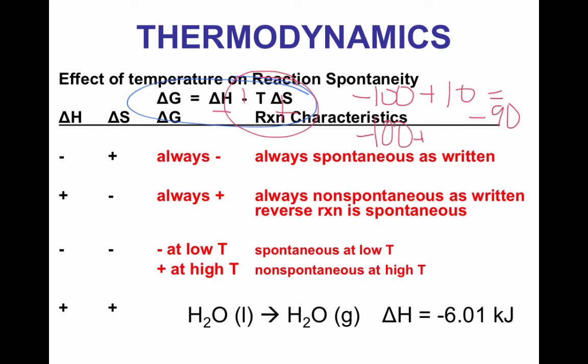At high temperatures it would be non-spontaneous — think of negative 100 plus 200, which ends up being positive, and delta G must be negative for spontaneity. An example is the freezing of water, going from liquid water to solid water. A small amount of heat is released when you freeze something, and entropy is also negative since you're becoming more ordered. At a low enough temperature, such as 273 Kelvin (zero degrees Celsius), water will freeze and that is spontaneous. But at 373 Kelvin or 100 degrees Celsius, that reaction is not spontaneous. So it depends on the temperature — and again, that's when both signs are the same, both negative.